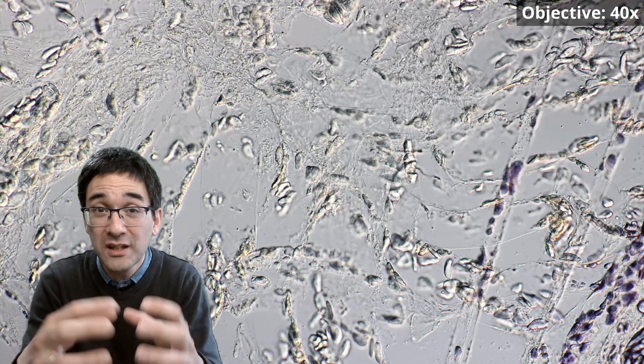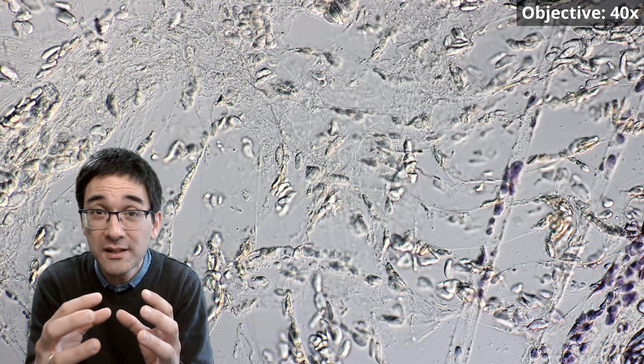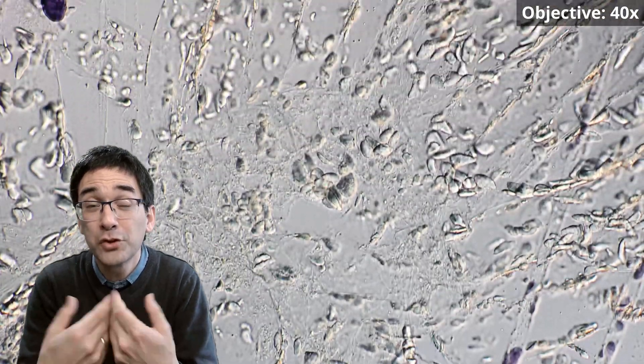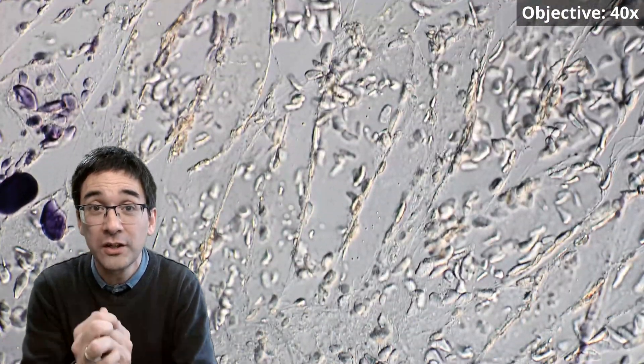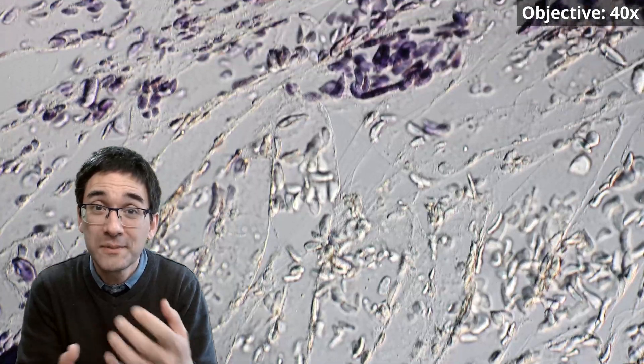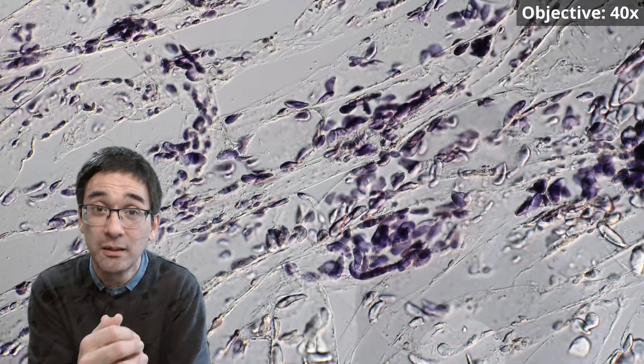And the second problem is, if you are able to somehow contain glucose in one place, well then you have the problem of osmosis. Water wants to go into that area and it kind of upsets the osmotic balance of the cell.